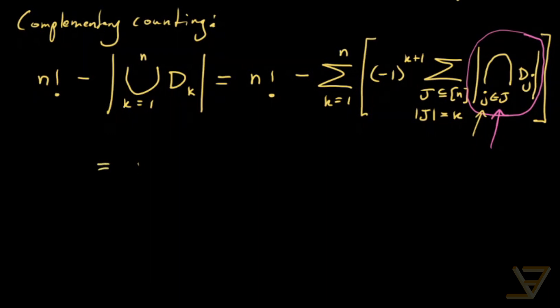What that allows us to do is compute this cardinality over here as n minus k factorial. So the factorial of n minus k. And this negative we can turn into a positive by turning the k plus 1 into just a k. So we get the sum of k equals 1 through n of negative 1 to the k.